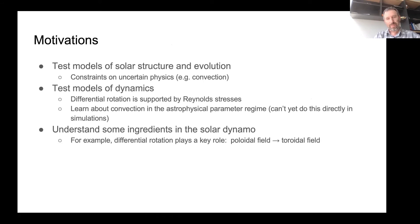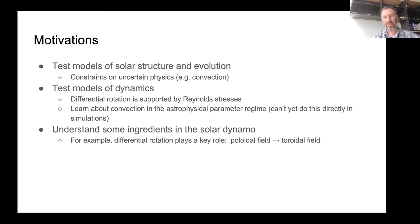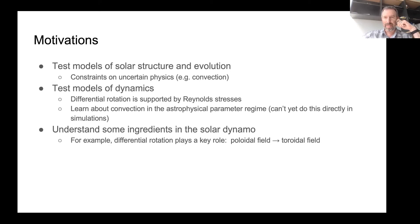Why do we want to do this? Different people would give different answers, but here are some of mine. One is that it's an opportunity to test models of solar structure and evolution — this places constraints on a lot of uncertain physics, for example the role of convection. The next one is particularly exciting: it's a chance to test models of dynamics. Differential rotation of the sun is supported by Reynolds stresses, and these Reynolds stresses presumably come from the convection. So this is a way to place constraints on models of convection in a really extreme parameter regime that's just not accessible to simulations.